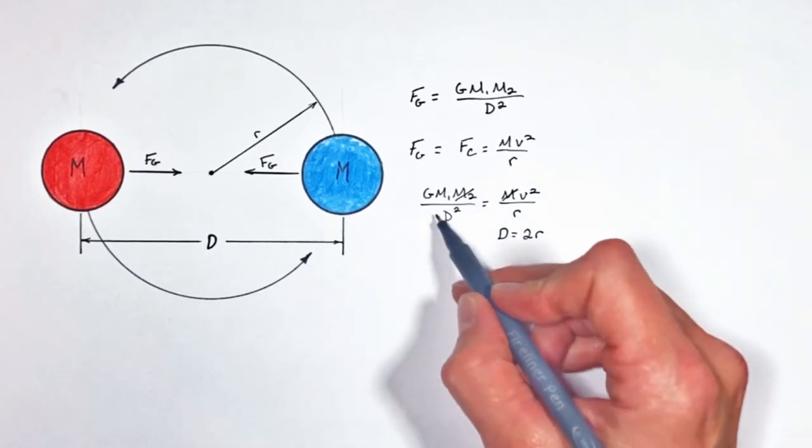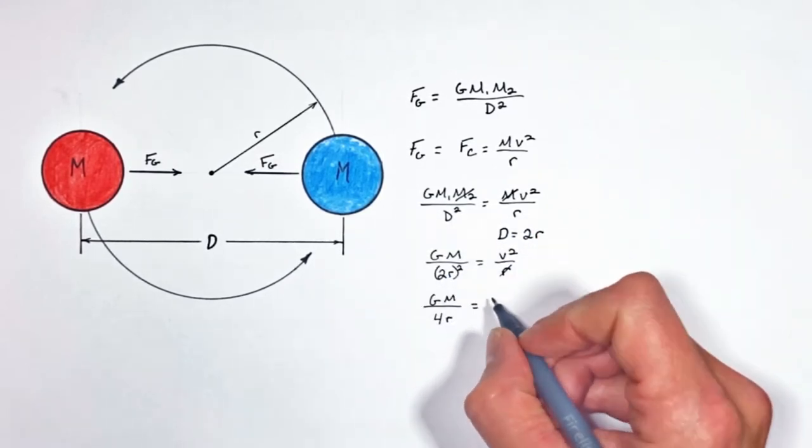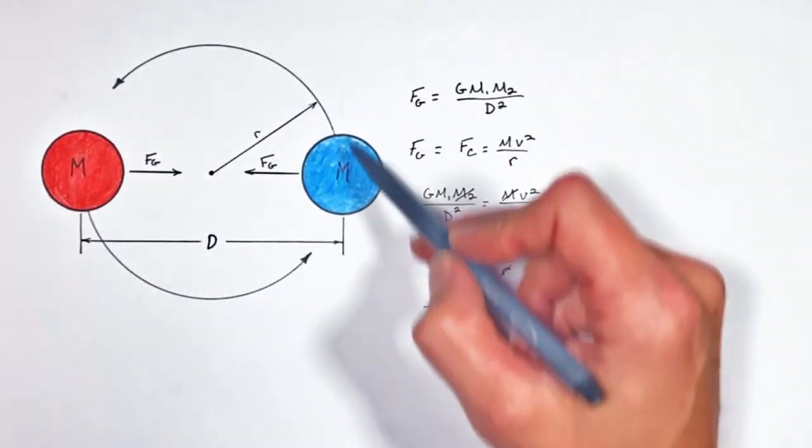Now subbing this term in right here, we get the velocity of these objects as they orbit one another.